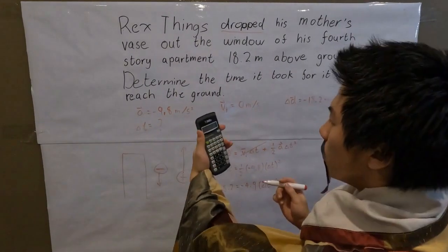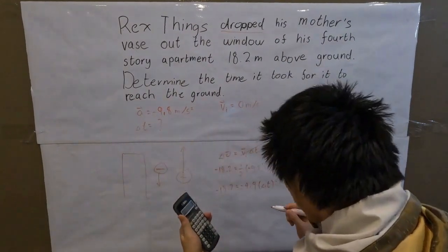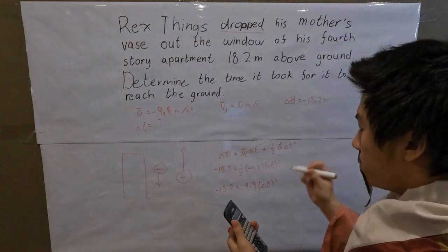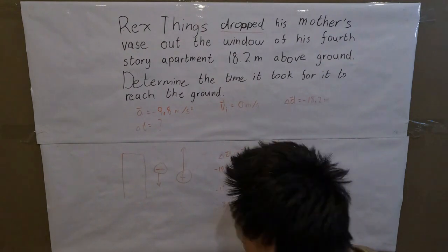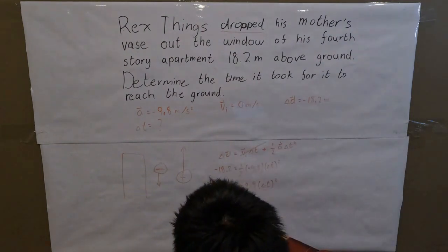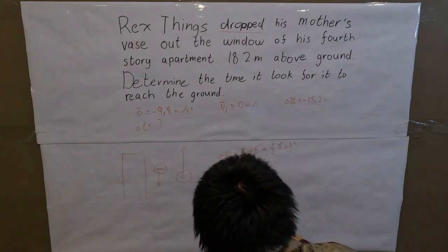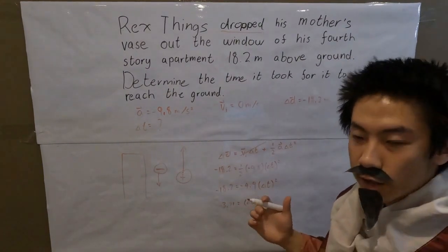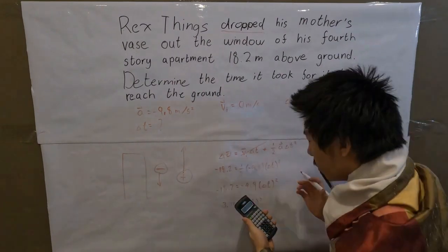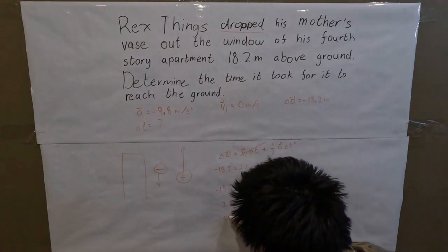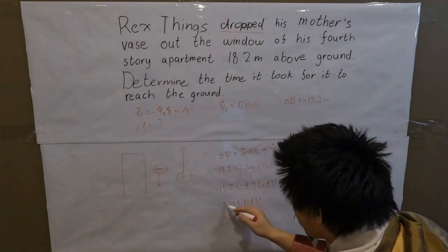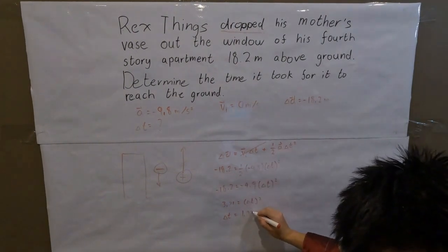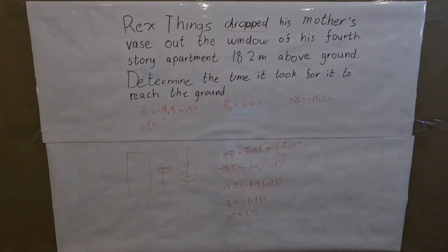And so, by using this wonderful and amazing tool, we find that negative 18.2 divided by negative 4.9 is equal to 3.71, and that is equal to t squared. And now it is so simple to find the answer, thanks to this magnificent tool. t, or change in t, is equal to the square root of 3.71, which is 1.93 approximately. And what is the units for this?